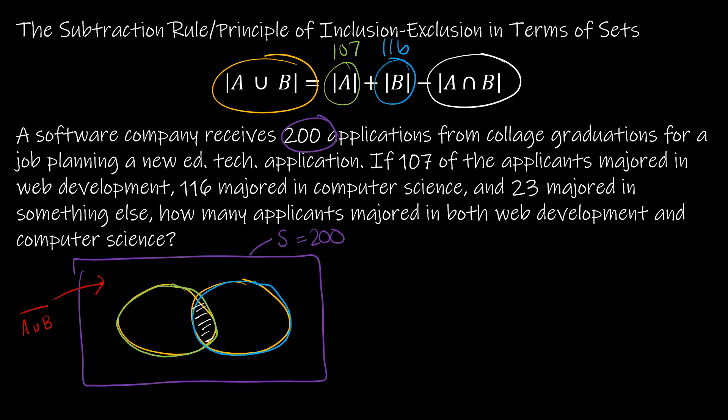So that's going to come into play here. So now let's look at the question. A software company receives 200 applications from college graduates for a job planning a new ed tech application. If 107 applicants majored in web development, so that's, we're going to call that A. 107 majored in web development, 116 majored in computer science, and 23 majored in something else. How many applicants majored in both web development and computer science? So really, they're asking for this. This is our variable. What's the intersection? Now that's easy to solve for, except guess what? We don't know this guy yet. It didn't say this many were in both web development or computer science, either or. It said there's 200 total. And by the way, there's 23 that didn't major in either of those things.